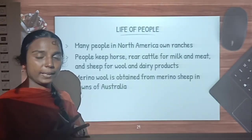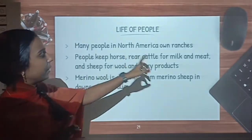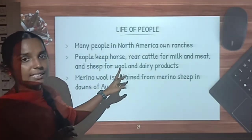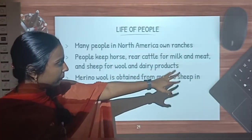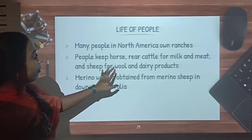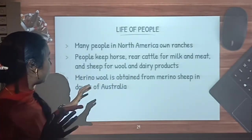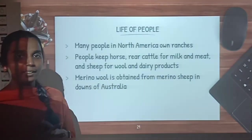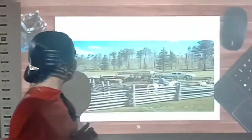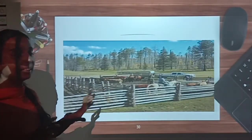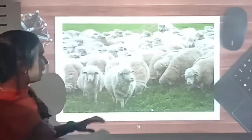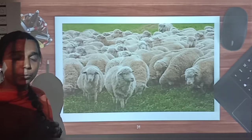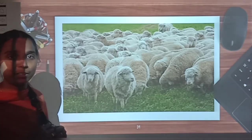In North America most of the people own ranches. In ranches they keep horses and rear cattle for milk and meat, and also sheep for wool and dairy products. Among them, in the downs of Australia, merino wool is obtained from merino sheep. This merino sheep gives us a high quality wool called merino wool.